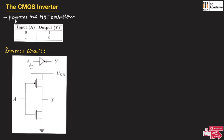Here, A is the input and Y is the output. The circle always indicates the inversion operation. This is the actual transistor-level circuit implementation of the CMOS inverter. We call it a CMOS inverter because it consists of both PMOS as well as NMOS. This is the PMOS transistor, where the source is connected to VDD, which is the positive supply voltage. The gate is connected to input A and the drain is connected to output Y. You can observe there is a small bubble on the gate, which indicates this transistor is a PMOS transistor.